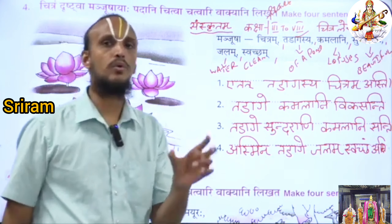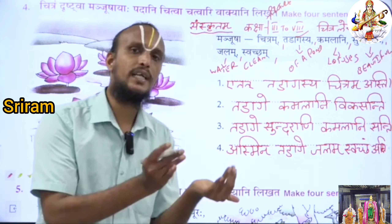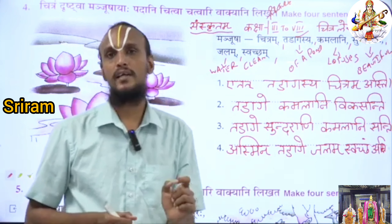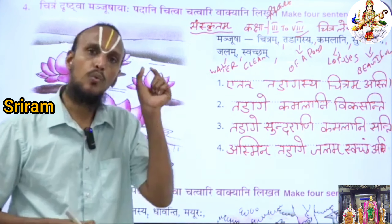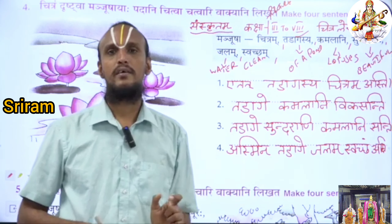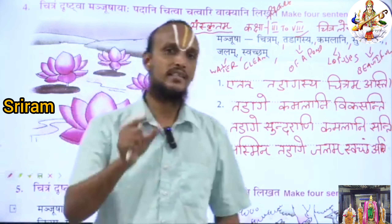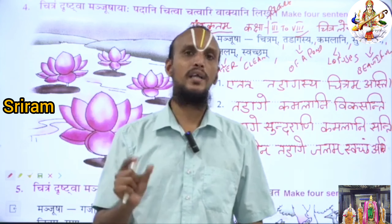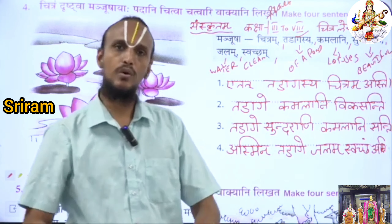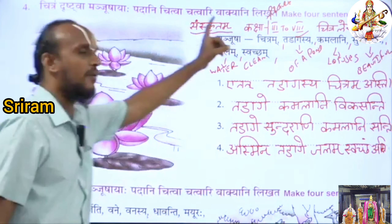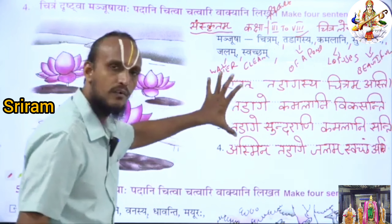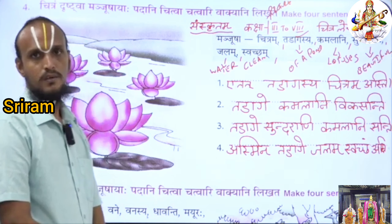One thing you have to know: you make a simple sentence or a brief sentence, but you have to know clearly in what gender, in what number, and in what case ending you are making the subject — in that same number only, you have to write the verb. This is the common instruction. So by seeing this picture, with the help of the words, and by understanding their meaning, you can easily write four sentences.